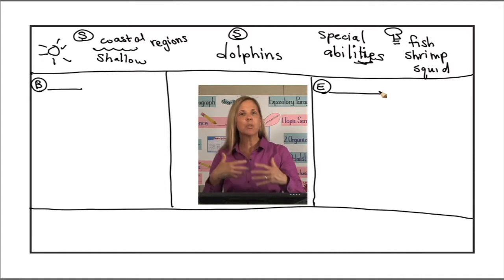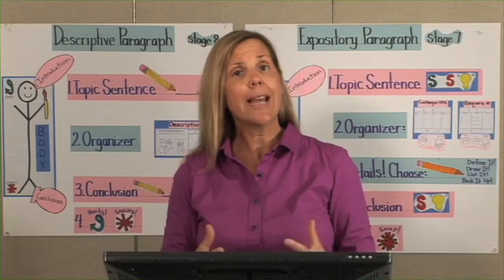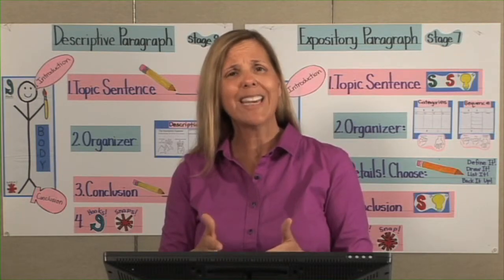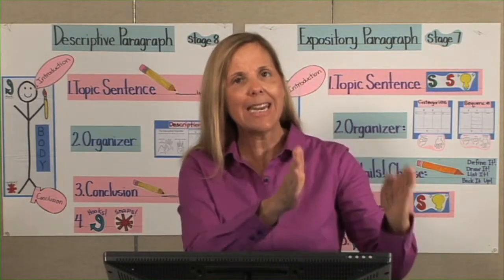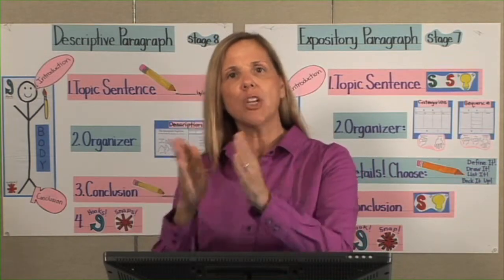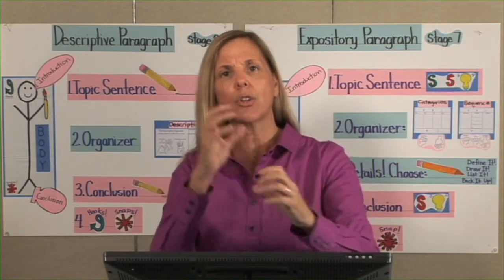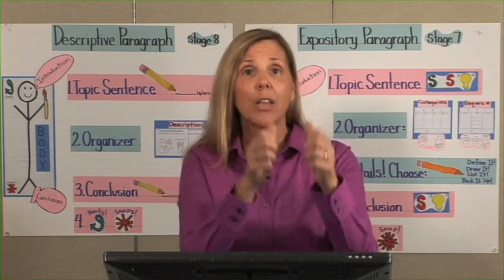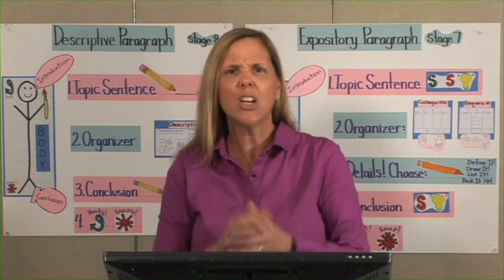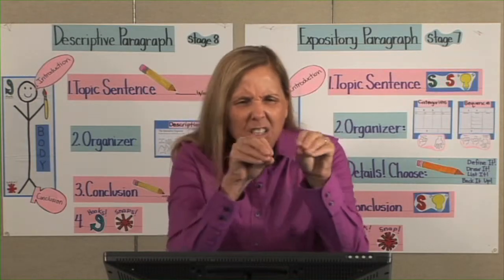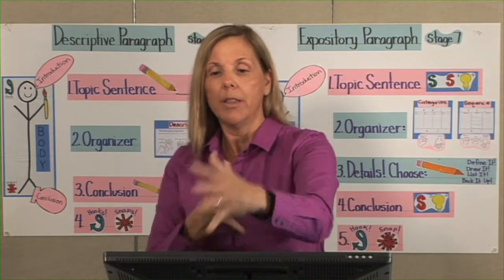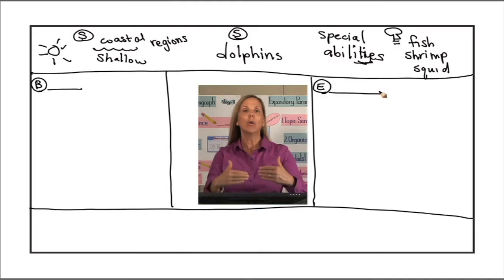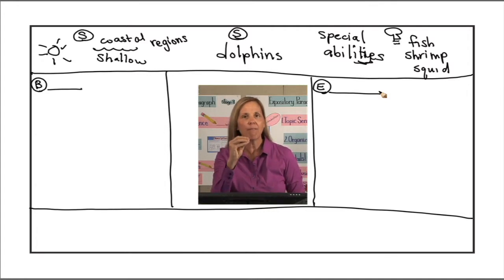What happened second? The dolphin used its large tail fluke to herd the group of fish together. How many things happened in the middle? Two. So we write one with a line and two with a line. The dolphin slapped its tail fluke and the fish went flying and became paralyzed—we write keywords: tail fluke, fish up in the air, paralyzed. The second middle step: the dolphin herded them together—we put the tail and the word 'herd.' Finally at the end, scoops them up. We put ideas in order using keywords and pictures.